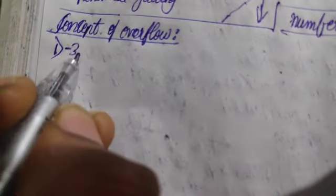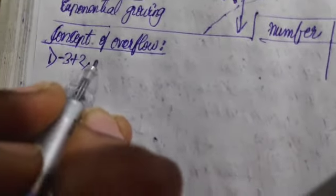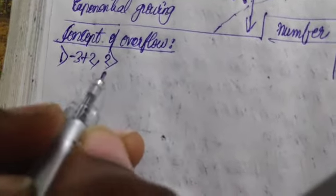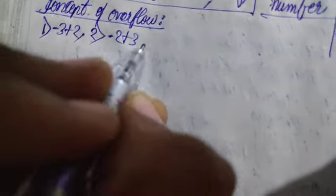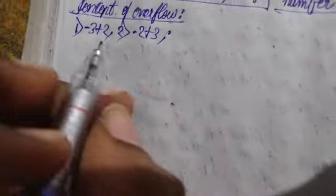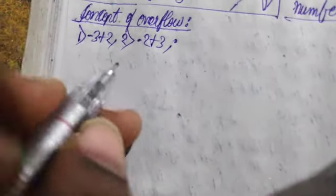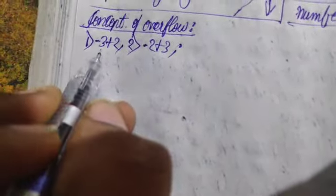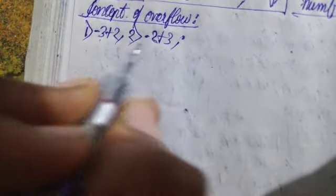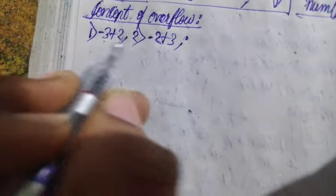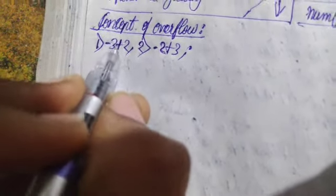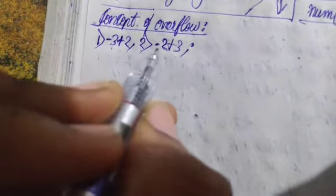The first case is minus three plus two, and the second case is going to be minus two plus three. Now let us find out the ones, twos, and threes complement for all these numbers in terms of sign representation.